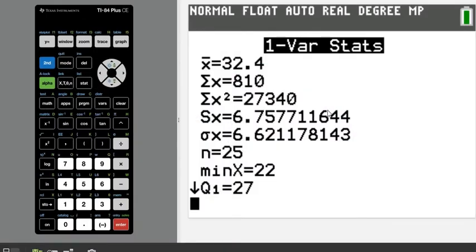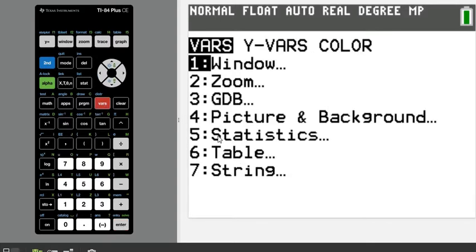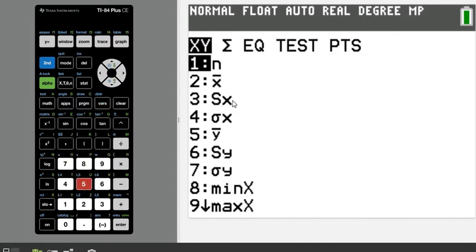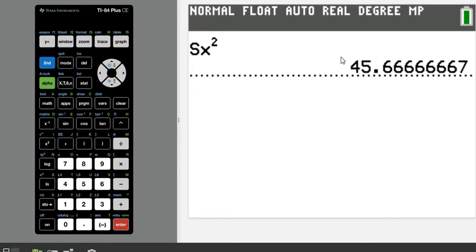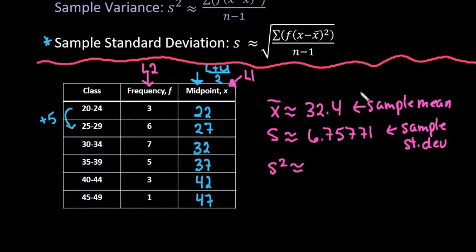And instead of having to remember this whole string of numbers, what you can do is you can hit the VARS button, which stands for variables. Choose option 5, which is statistics. And then option 3 would allow us to plug in the S sub X. And when you hit square, it will give you the 45.66 repeated. So this one is approximately 45.6 repeated. And this would be our sample variance.